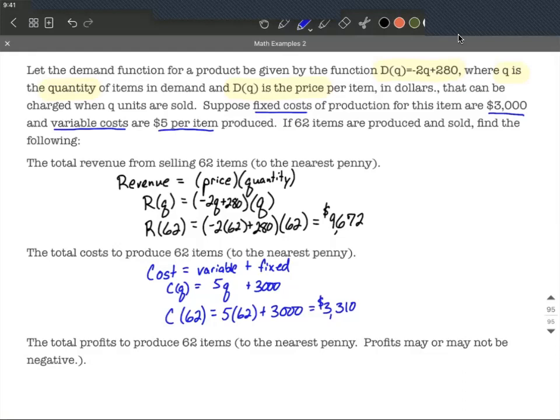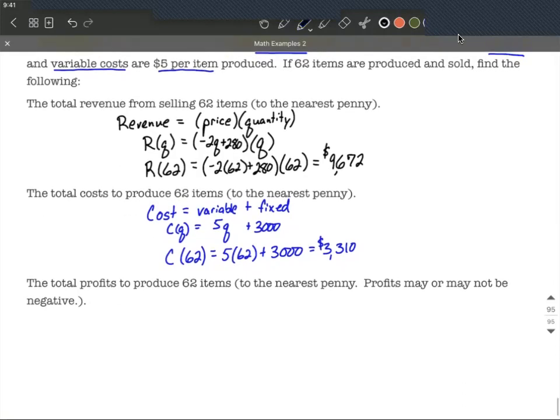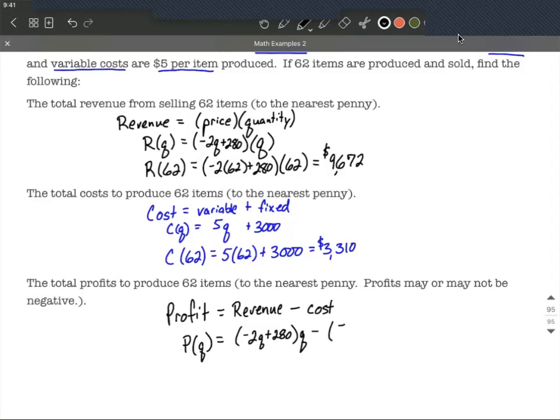Finally we want to figure out what's the profit going to be. Profit, if you'll recall, is simply all the money coming our direction, so the revenue, minus all of our costs, the money going away from us. We could set this up as p of q, the profit at selling q items, would be the revenue of negative 2q plus 280 multiplied by q minus our entire cost function. Remember, I'm going to put big set of parentheses here: 5q plus 3000. And then we could evaluate that at 62.